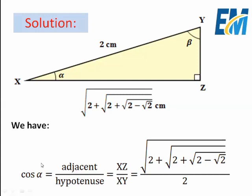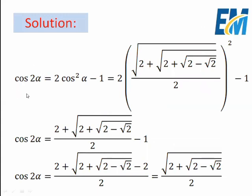It is difficult to find the exact measure of alpha directly because the expression for cos α has four nested square roots. So we will instead compute cos(2α). Using the double-angle formula, cos(2α) = 2cos²α − 1 = 2 × [√(2 + √(2 + √(2 − √2))) / 2]² − 1. Squaring cancels the square root, giving us (2 + √(2 + √(2 − √2))) / 2 multiplied by 2, minus 1.